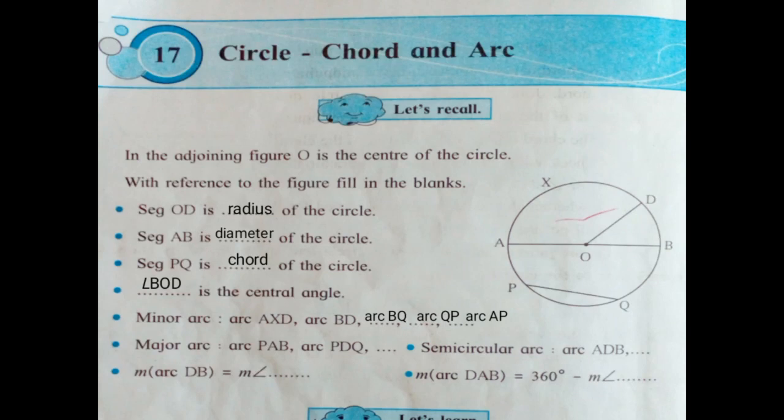Major arc: Two major arcs arc PAB and arc PDQ are already given. You have to name any 1 major arc. When you name major arc, it should be long distance from the chord of a circle. So I will name any 1 major arc: arc PXQ.